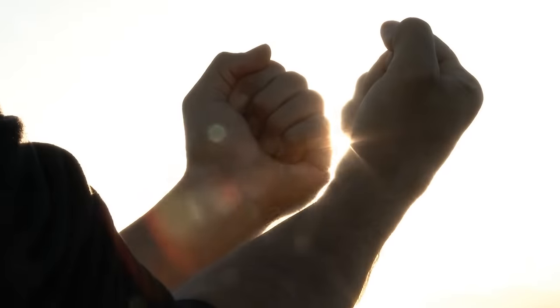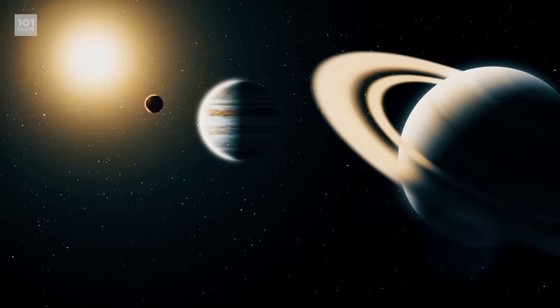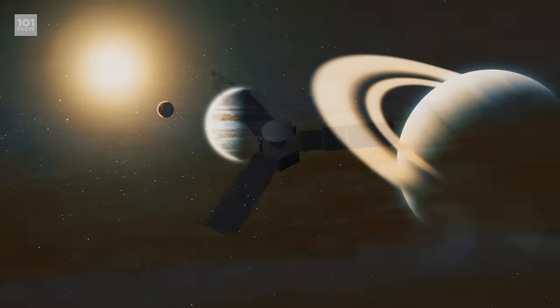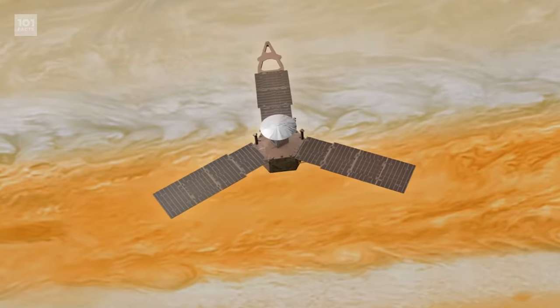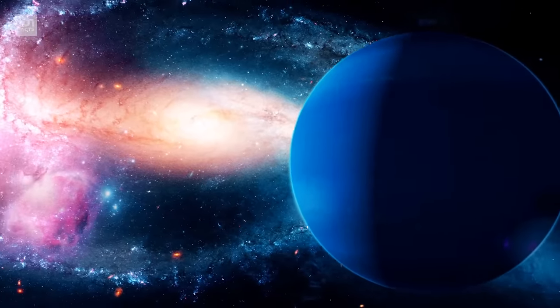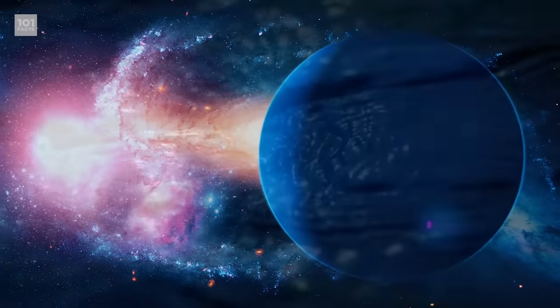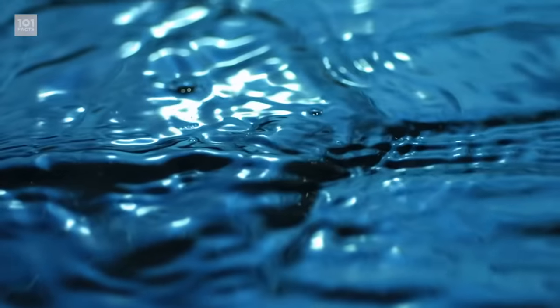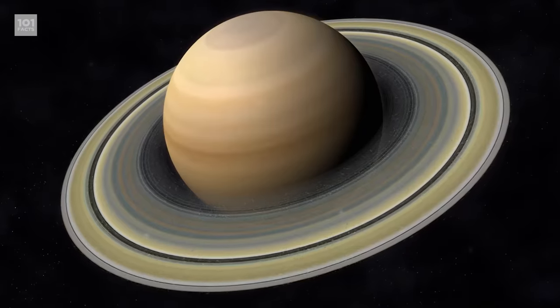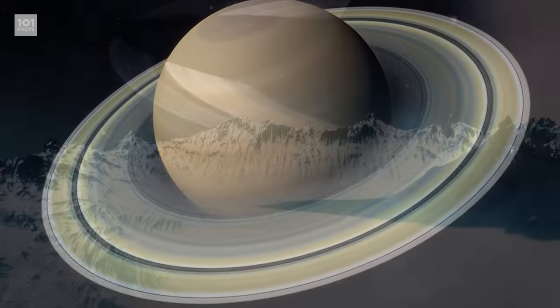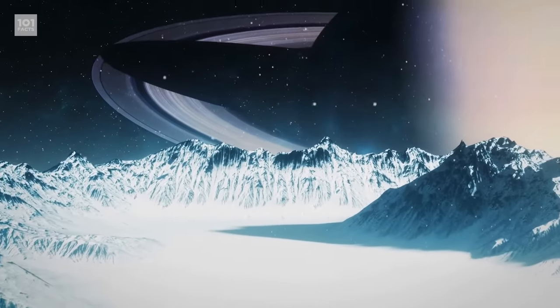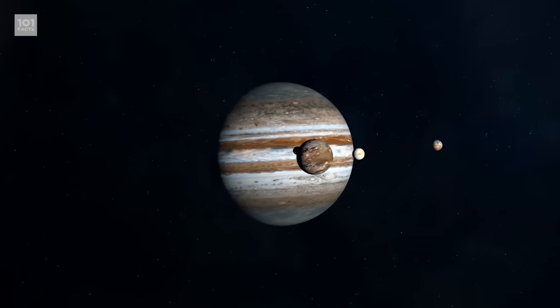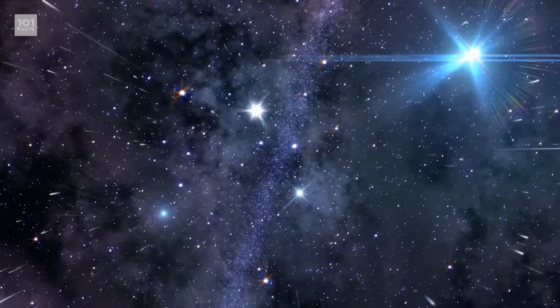There are also two categories of giant planets. Jupiter and Saturn are both gas planets, so named because they're mostly composed of hydrogen and helium. And Uranus and Neptune are ice giants, because they're made up of heavier chemical compounds like water, ammonia, and methane.